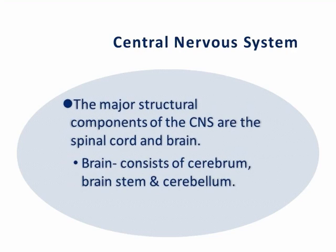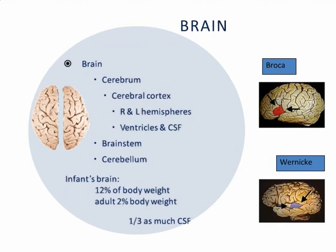The major structural components of the central nervous system are the spinal cord and the brain. The brain consists of the cerebellum, the brain stem, and the cerebrum. The brain consists of both the right and the left hemispheres. The right side of the brain controls muscles on the left side of the body, and the left side controls muscles on the right side. Sensory information from each side of the body crosses over to the opposite side of the brain.